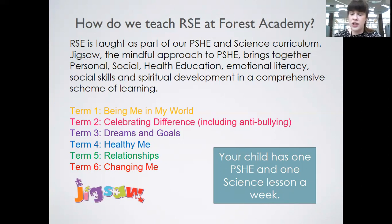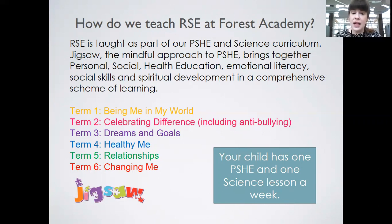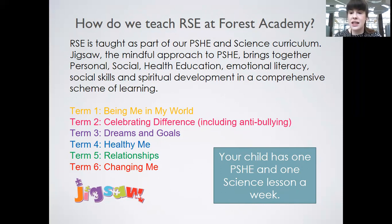We've just brought in Jigsaw, which we think is a fantastic PSHE curriculum. In autumn one, every child from Reception to Year 6 will be learning about being me in my world, building on their knowledge each year. In autumn two, children learn about celebrating differences, including anti-bullying. In spring one, they discuss their dreams and goals. In spring two, the theme is healthy me — healthy lifestyles and healthy choices. In summer one, they begin to explore relationships. And in summer two, they talk about changing me — changes to the body — and as they move into the upper years, looking at conception and how babies are conceived.